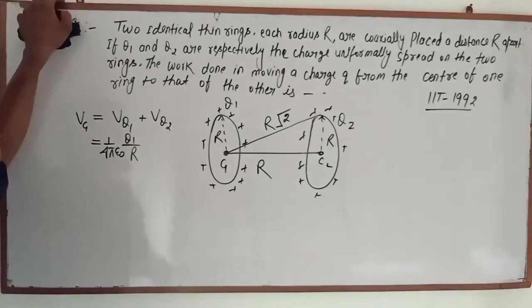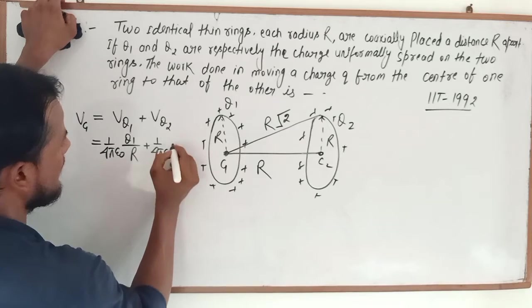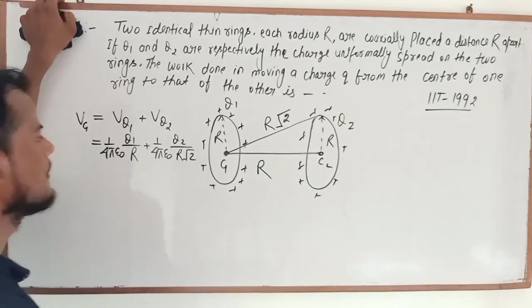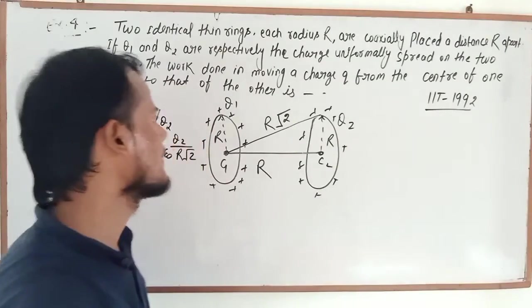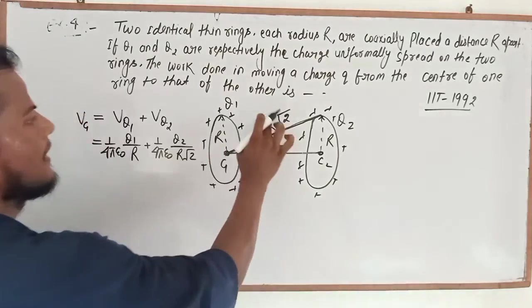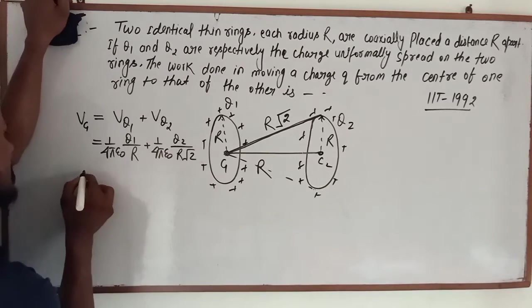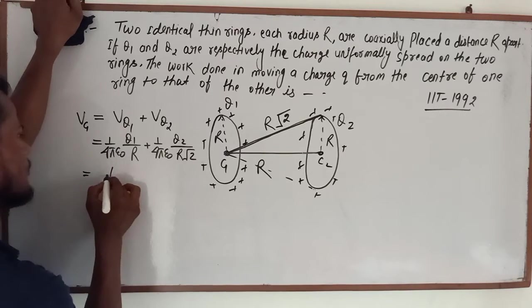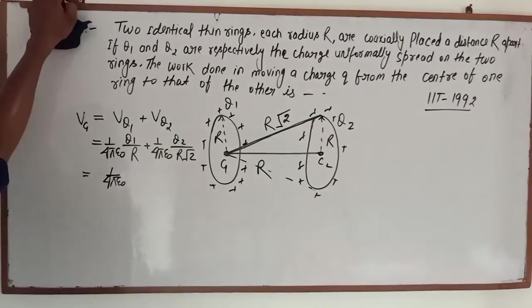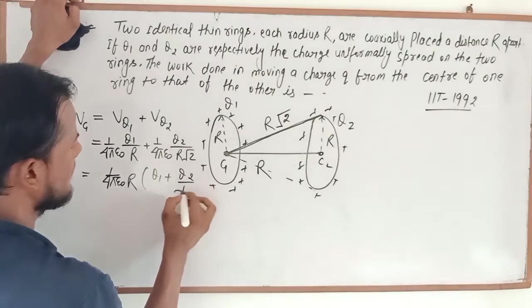So here we see one upon four pi epsilon naught, Q1 divided by R, and Q2 divided by root 2. Because the distance between the centers is R root 2. So the potential at C1 is Q1 divided by 4 pi epsilon naught R plus Q2 divided by 4 pi epsilon naught R root 2.